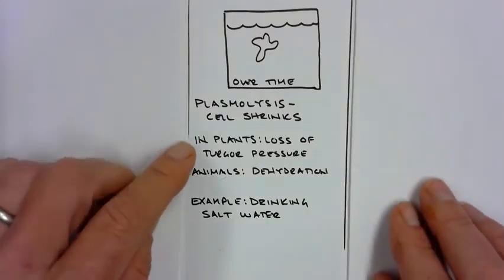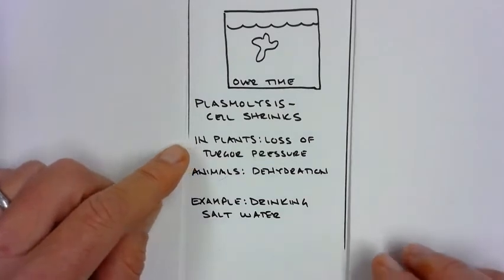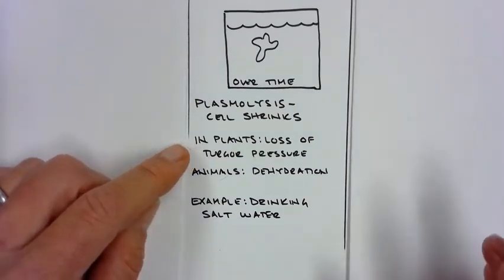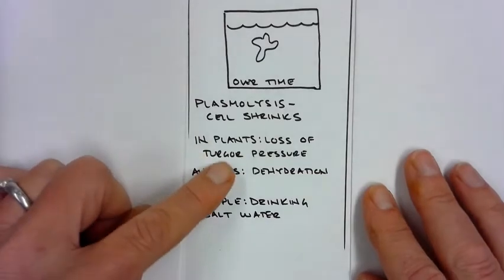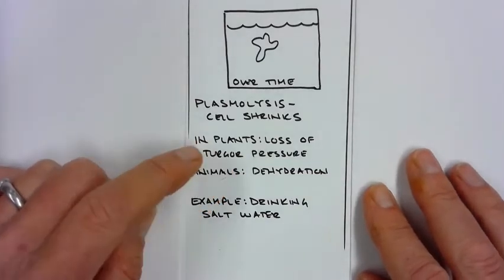For example, in plants, they have that large central vacuole that's filled with water, and if you water them with salt water, all of that water will flow out, and the plant will wilt because it doesn't have what we call turgor pressure, which helps keep the plant upright.